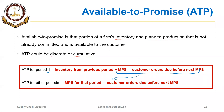We don't consider inventory from the previous period to calculate ATP for periods other than period 1. You simply need to calculate MPS using the logic we discussed and identify customer orders that are due before the next MPS. We are not using forecast values to calculate ATP.